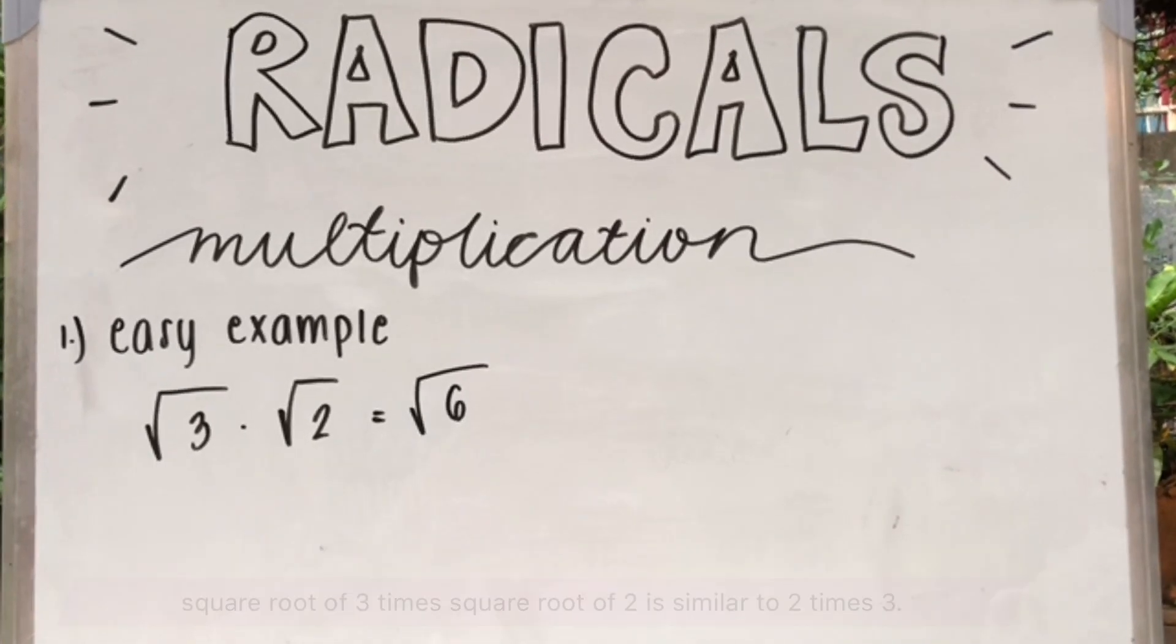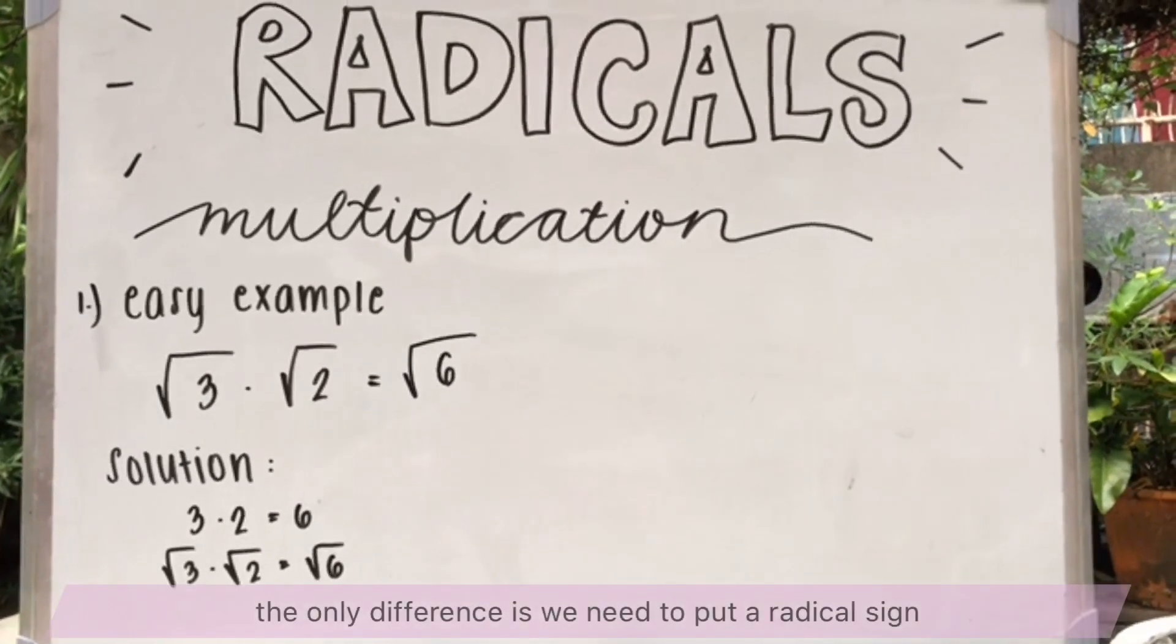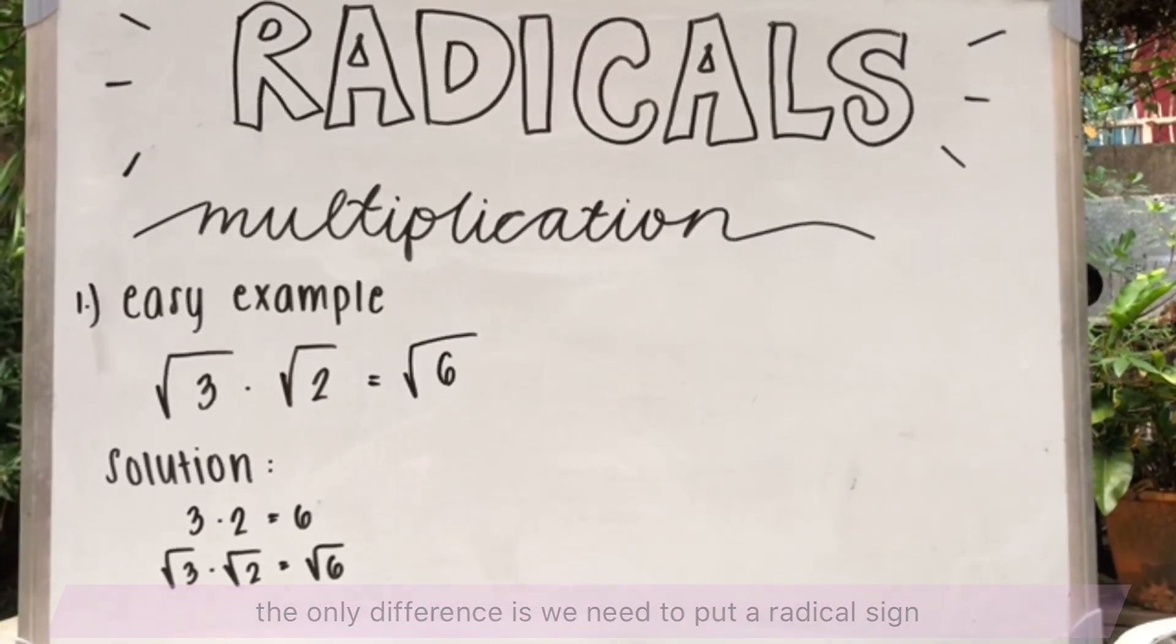And here's the solution. Square root of 3 times square root of 2 is similar to 3 times 2. The only difference is we need to put a radical sign.